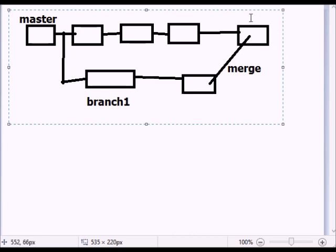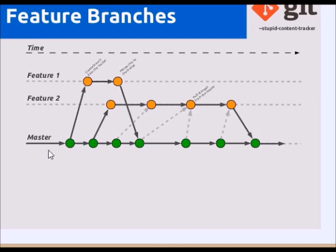We have a branch for ideas. So we have a master branch, a feature branch, and a feature 2 branch. We have a main branch here. We can modify the code and copy it. If we have any errors corrected, we can merge it. Feature 2 is an individual branch.